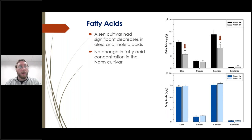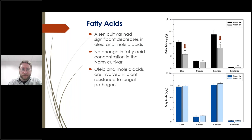For fatty acids, the Elsin cultivar had significant decreases in oleic and linoleic acid, while again the Norm cultivar had no significant changes. This is a very interesting change because both of these fatty acids are known to be involved in plant resistance to fungal pathogens.